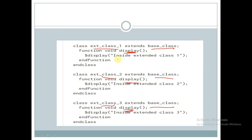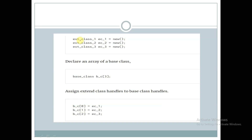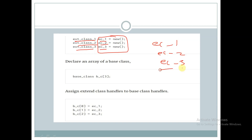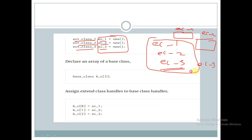Inside the display method we are displaying statements inside extended class 1, inside extended class 2, and inside extended class 3. Now we are creating handles for these 3 classes ext_class_1, ext_class_2, ext_class_3 as ec_1, ec_2, ec_3 and we are creating objects for these 3 handles. So ec_1, ec_2, ec_3 are the 3 handles for the extended classes and we have created objects for these handles. Each object has memory — ec_1, ec_2, and ec_3 each have separate memory.